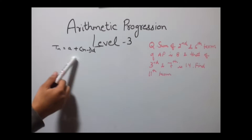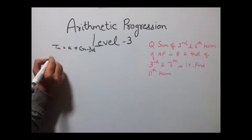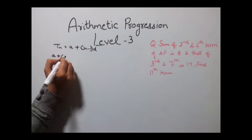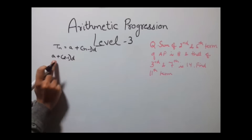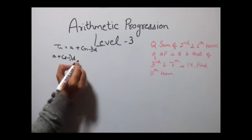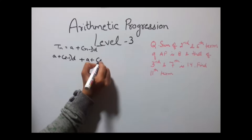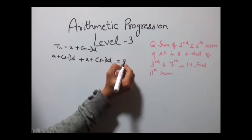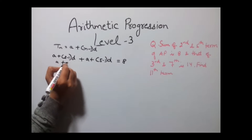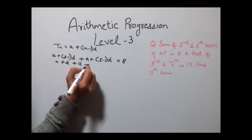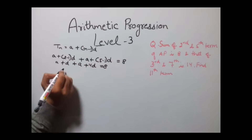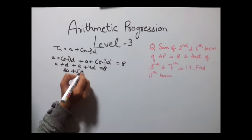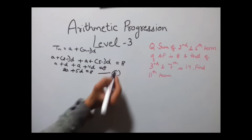So the 2nd term is a + (2−1)d, and the 5th term is a + (5−1)d, and their sum equals 8. This gives us a + d + a + 4d = 8, which simplifies to 2a + 5d = 8. This is our first equation.